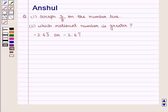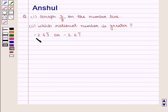Hello and welcome to the session. In this session, we shall discuss the following question. The first part says: graph 3 upon 8 on the number line. The second part asks: which rational number is greater, minus of 2.63 bar or minus of 2.67 bar? Now let us proceed to the solution.